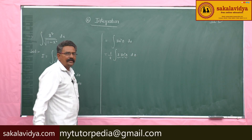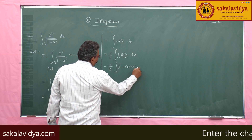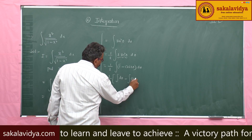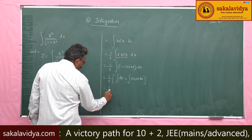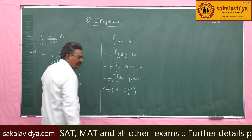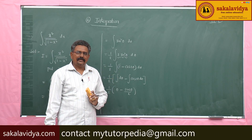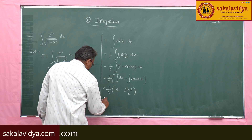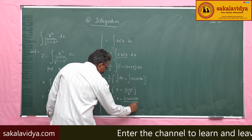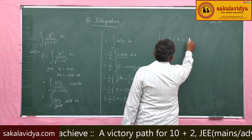We have the integral of sin²θ dθ. Multiplying and dividing by 2, we use the identity 1 − cos 2θ = 2 sin²θ. So this becomes 1/2 · integral of (1 − cos 2θ) dθ, which equals half times (θ − sin 2θ / 2). Since sin 2θ = 2 sin θ cos θ, the 2s cancel, giving us half times (θ − sin θ cos θ).